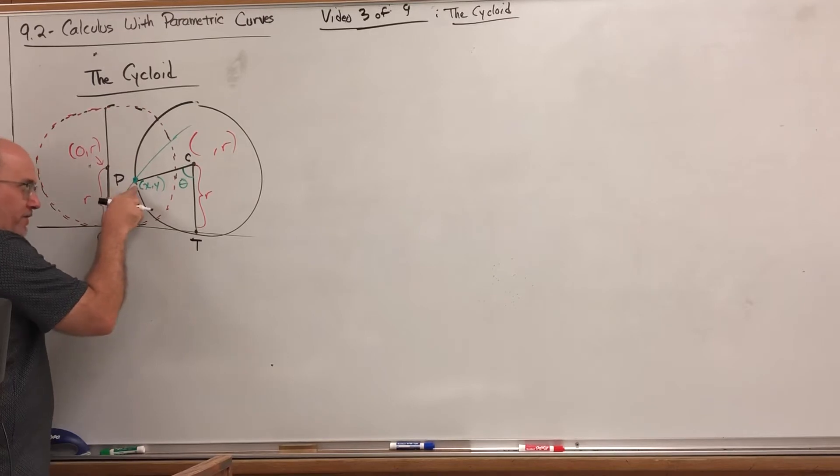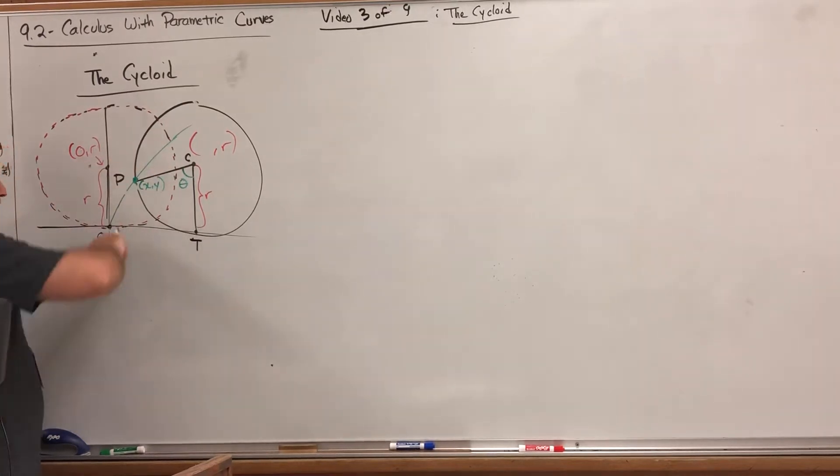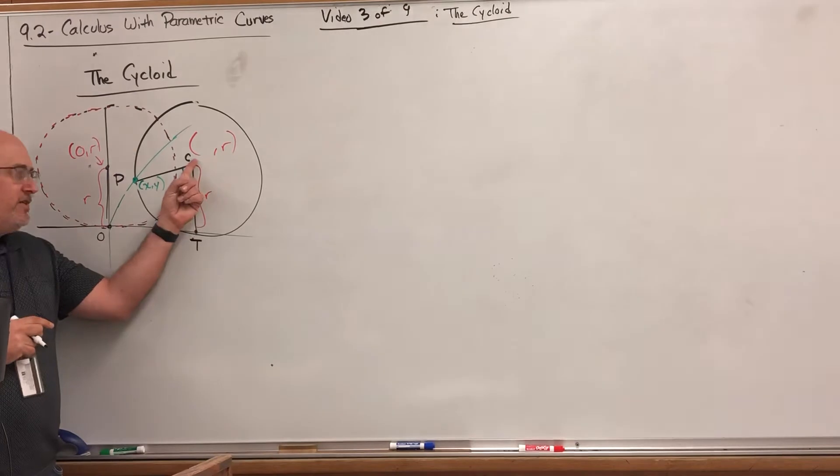Imagine keeping track of this line as we rotate the circle, and theta is going to be our parameter, our angular rotation parameter if you will. Our objective is to find the equations that give us the coordinates of this point, the point on the circle that was originally at the origin before we started rotating.